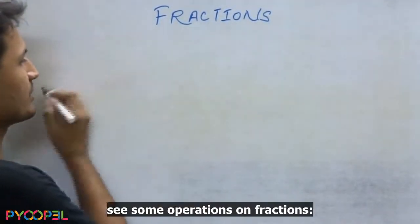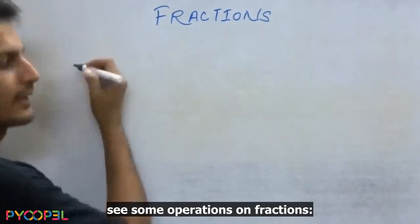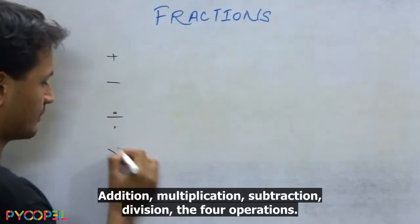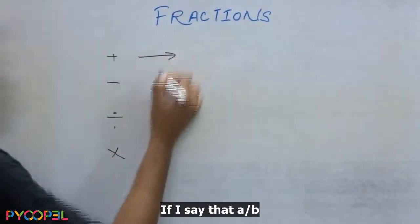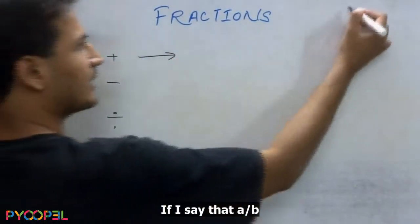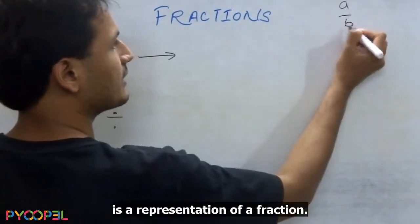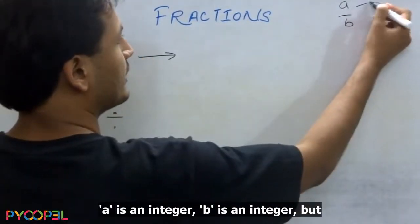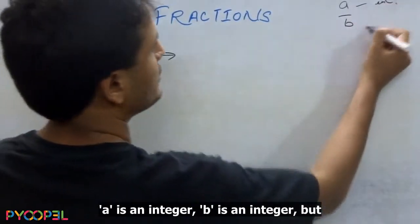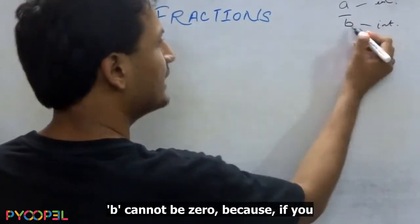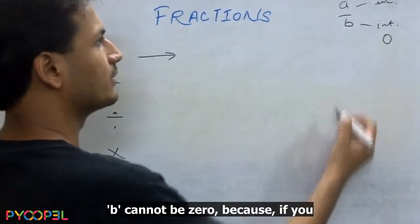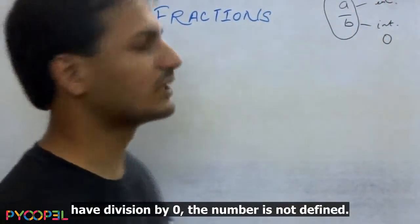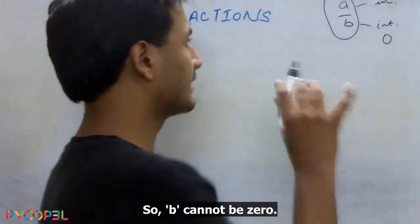First up we see some operations on fractions. Addition, multiplication, subtraction, division - the four operations. If I say that a by b is a representation of a fraction, a is an integer, b is an integer but b cannot be 0. Because if you have division by 0, the number is not defined. So b cannot be 0.